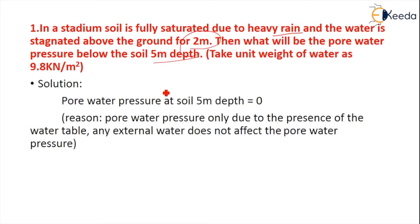The pore water pressure at 5 meter soil depth is zero. The reason is that pore water pressure is only due to the presence of the water table, not any external water. Any external water that is stagnated does not affect the pore water pressure. Hence the pore water pressure of the soil is zero.